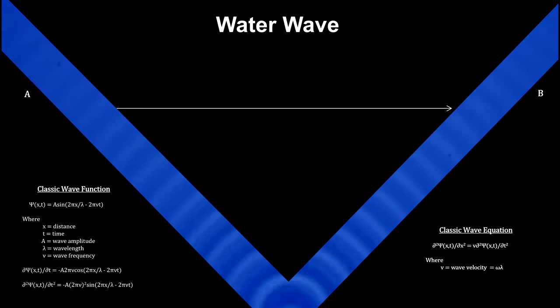If we examine branch A at some time T and find that the wave is at a peak, we will know immediately that at that exact time, the branch B wave will also be at a peak.